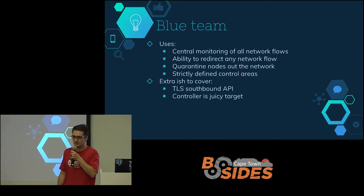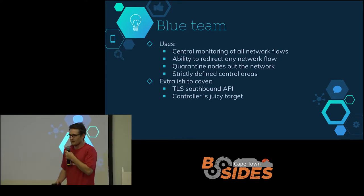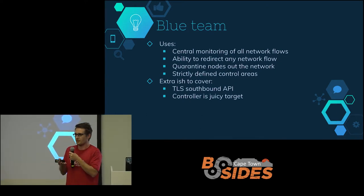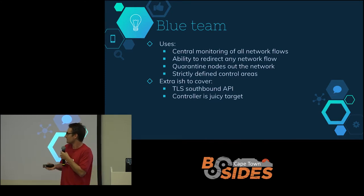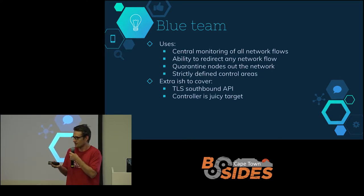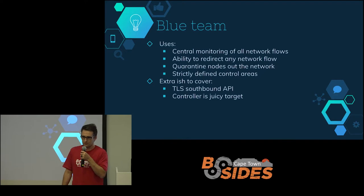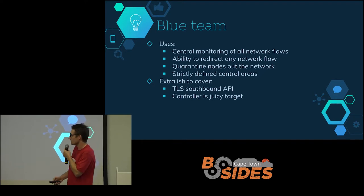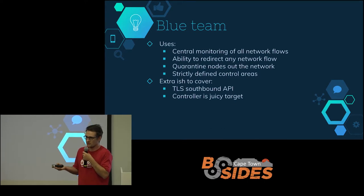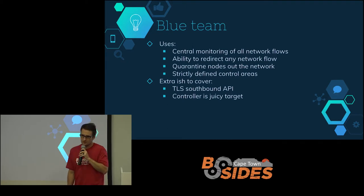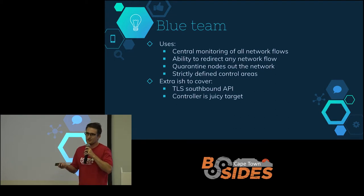In terms of what uses you can get out of SDN as a blue team: it really allows a holistic view of the entire network at the network operating system, and you can alter any flow you see fit. That allows you to quarantine and completely section off nodes from the network, or re-route them to wherever you want. It does come with a caveat — you obviously need to make sure TLS is set up between your switches and your network operating system, otherwise you can sniff all that OpenFlow traffic.